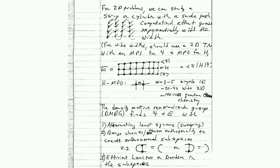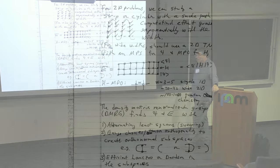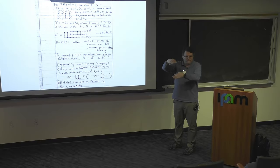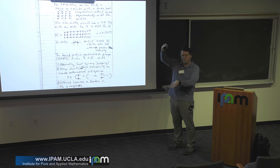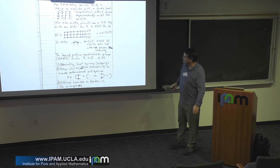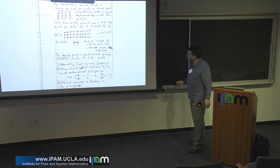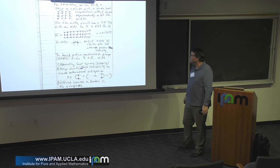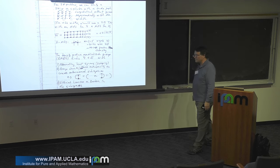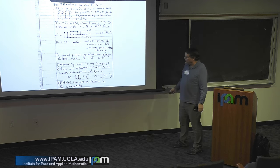If you want to do a wide 2D system, you should probably be using a 2D tensor network. But there's some trade-off, because the calculational efforts for 2D tensor networks tend to be much higher.